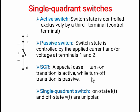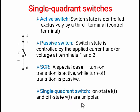The SCR is a special case switch. When we apply the gate signal to the SCR, it will turn on. Once the SCR turns on, the gate loses control — that means we cannot turn off the SCR by removing the gate signal. So this is the special case in which the turn-on process is active but the turn-off process is passive. In a single quadrant switch, the on-state current IT and off-state voltage VT are unipolar. In the first quadrant, voltage and current are both positive. In the second quadrant, current is positive but voltage is negative. In the third quadrant both are negative, and in the fourth quadrant voltage is positive and current is negative.